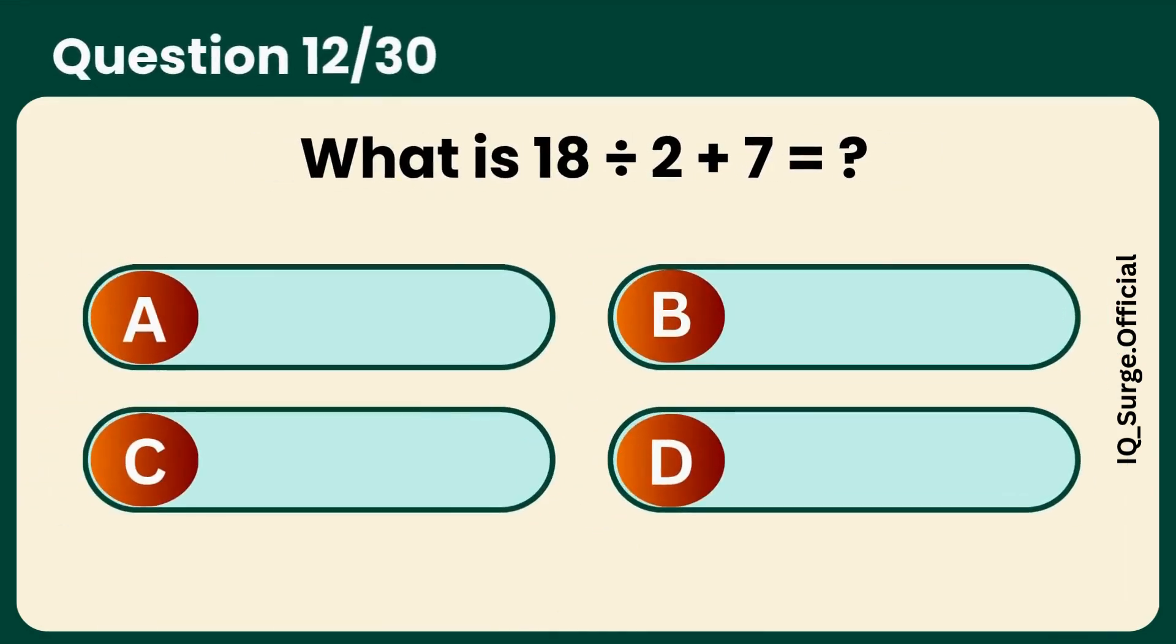What is 18 divided by 2 plus 7? Answer B, 16.